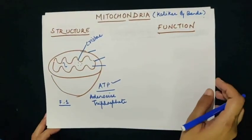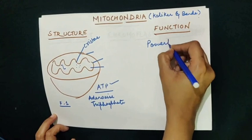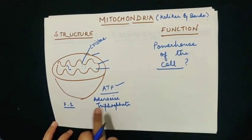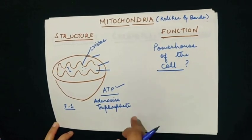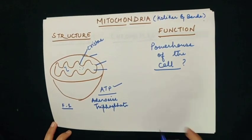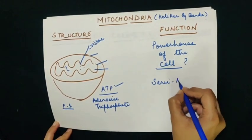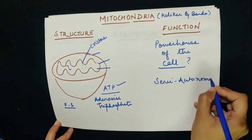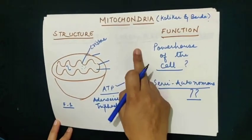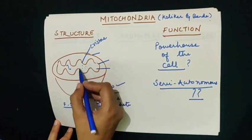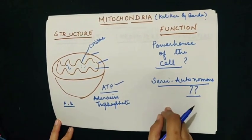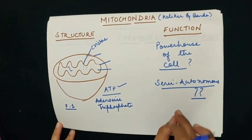Moving on to the function of mitochondria: mitochondria is mostly called the powerhouse of the cell. It is called the powerhouse of the cell because it helps in ATP synthesis. Mitochondria is also called a semi-autonomous cell organelle because it has got its own DNA and proteins, and this DNA is capable of replicating independently.